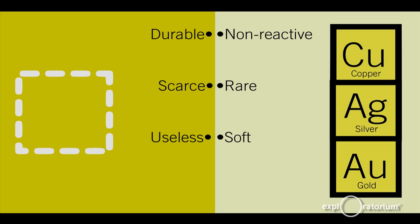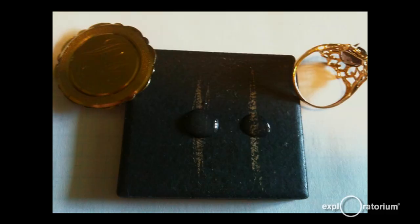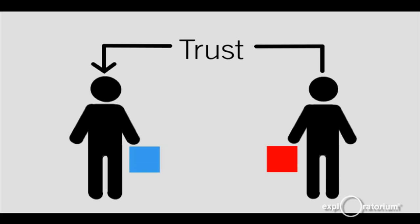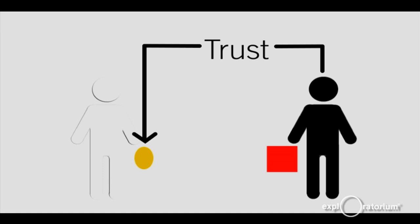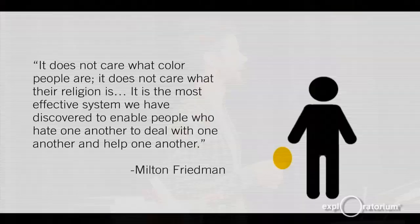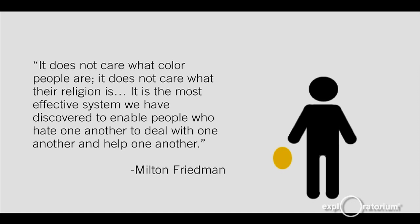You want something you can easily recognize, and these metals are very shiny with distinctive colors. There's an antique method of testing the purity of gold: scrape it on a pumice stone, pour some acid on it, and if it disappears, it's not real gold. The capacity to verify gold has an interesting effect on the problem of trust in trading. If you're trading with gold and you can verify it, it doesn't matter who's giving it to you — you can trade with someone you'll never see again or someone you actively distrust. As Milton Friedman explained, money is the most effective system we've found to enable people who hate one another to deal with one another and help one another.